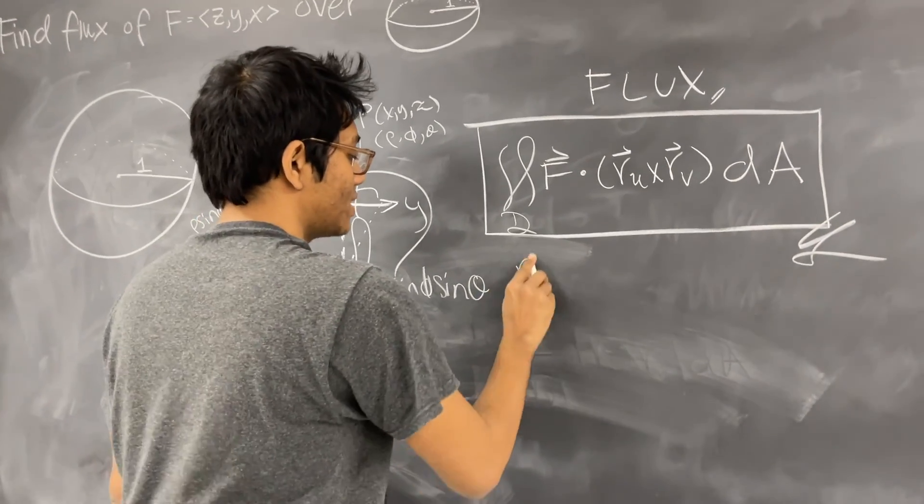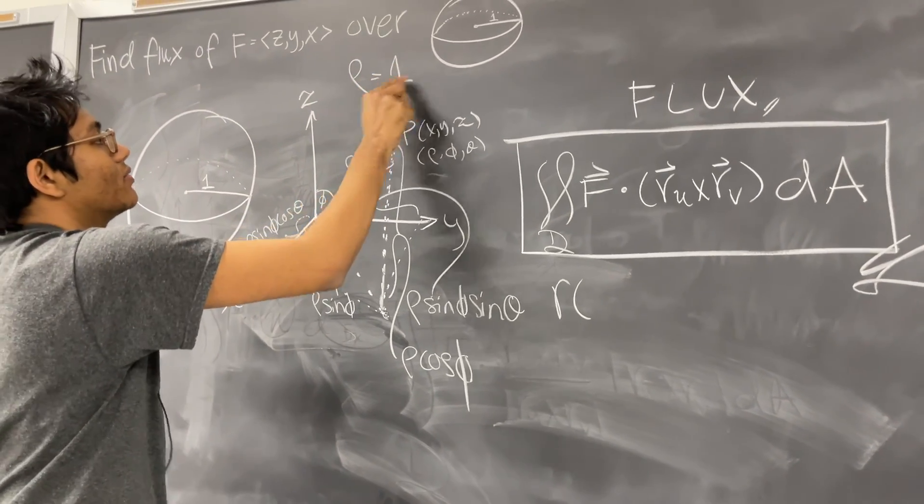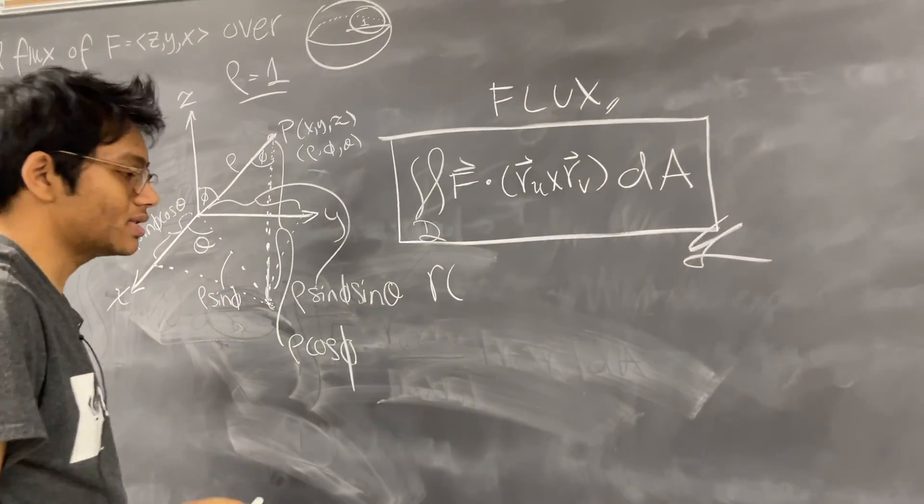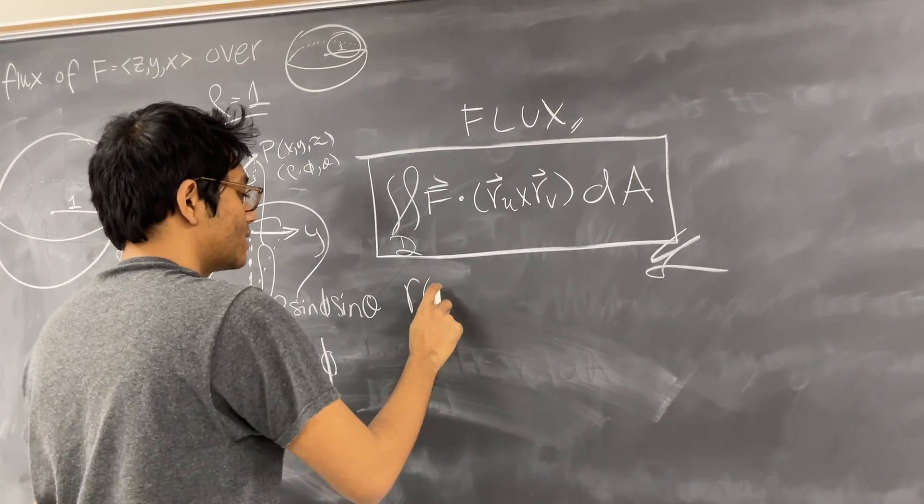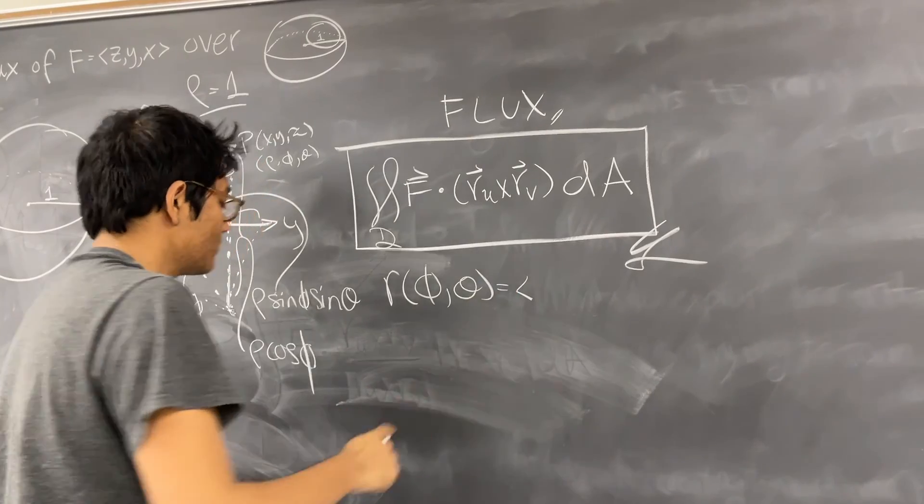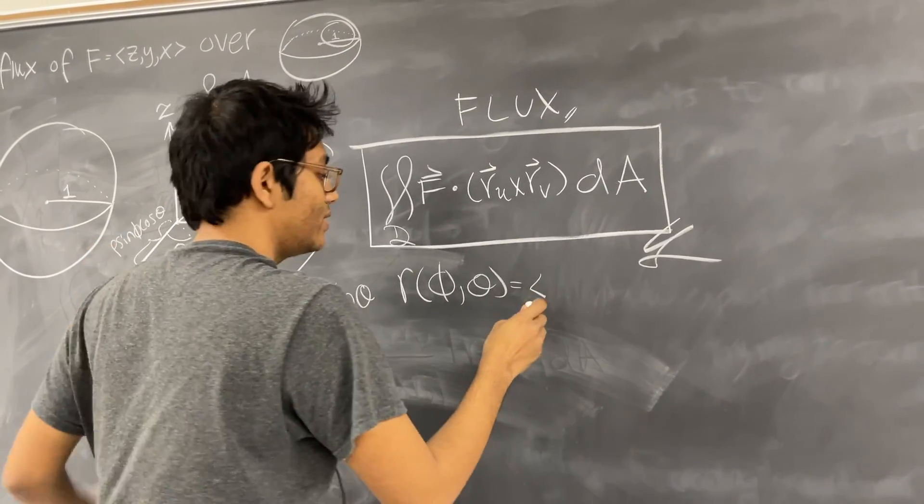So our parametrization of the unit sphere - now remember for a unit sphere, rho is going to be 1, right? The radius is just 1. So I'm just going to ignore all the rhos, just replace them with 1s. And so we're going to have the following parametrization for our unit sphere. For X we have sine phi cosine theta.